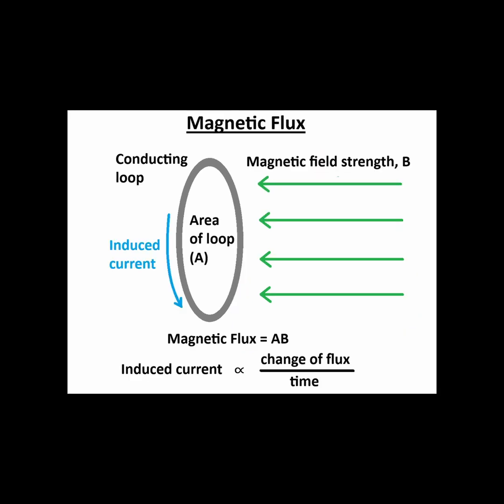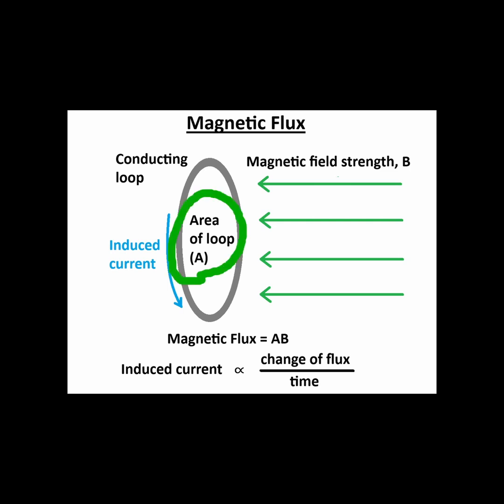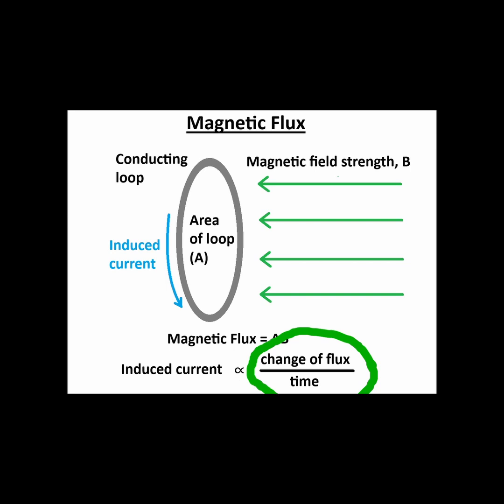We can define a quantity called magnetic flux, which is the amount of magnetic field passing through an area, like the interior of a loop. The amount of magnetic flux passing perpendicularly through a loop is equal to the magnetic field strength, B, times the area of the loop, A. The size of the induced current is then proportional to the rate of change of the magnetic flux per unit of time.